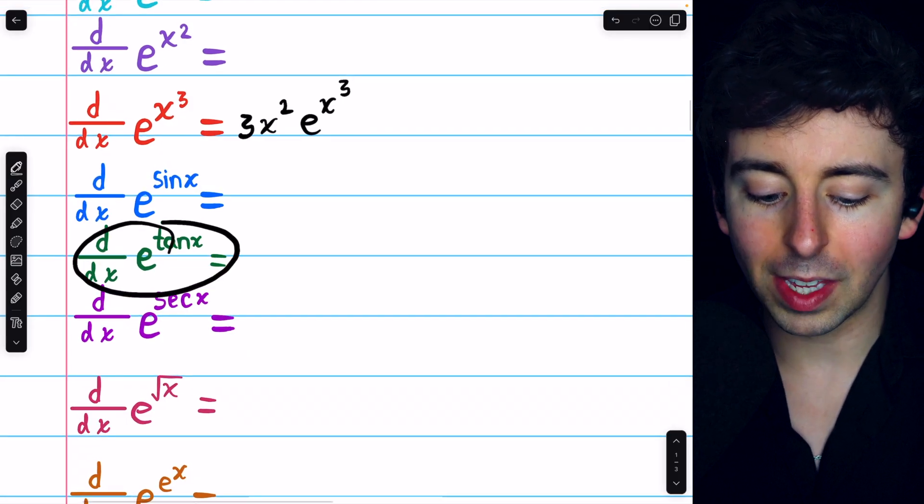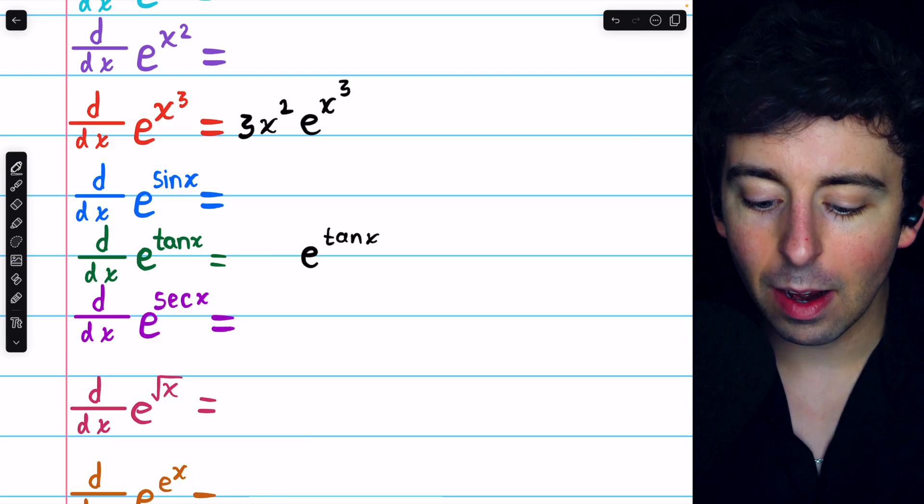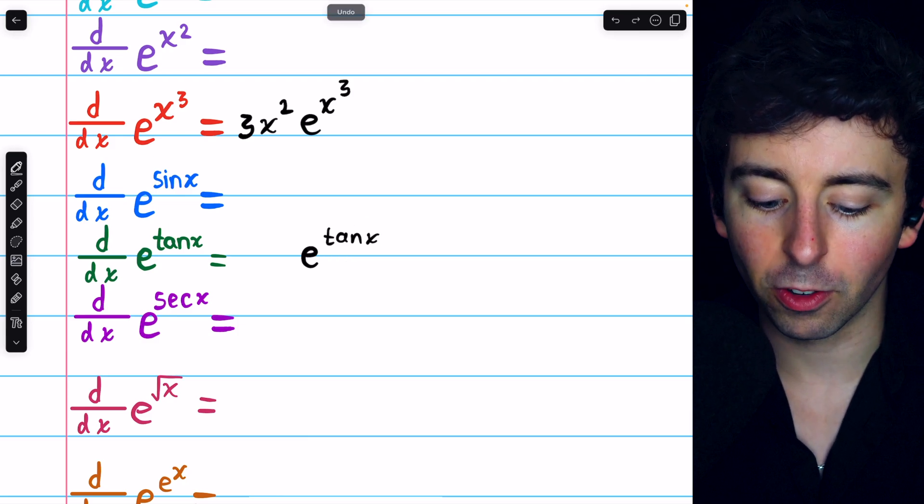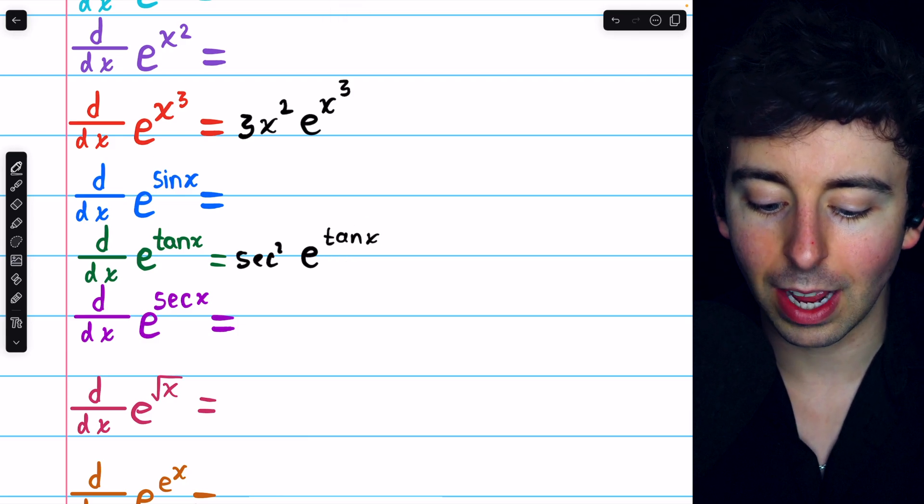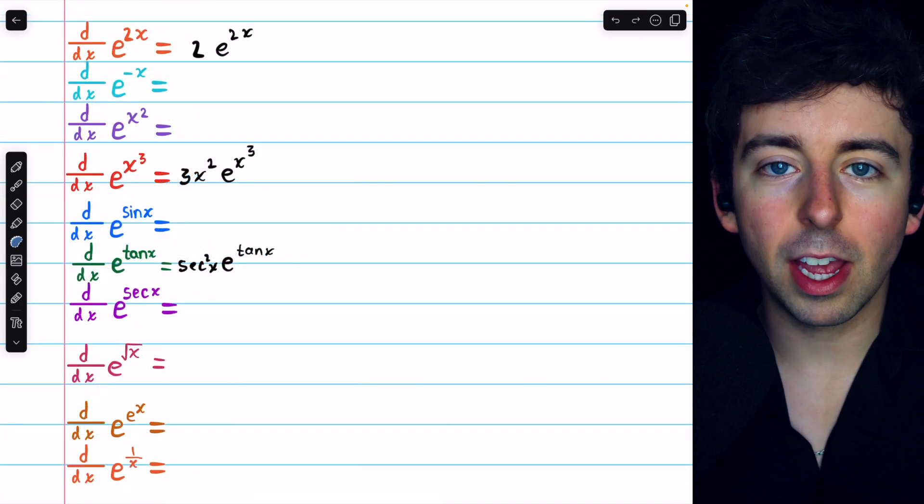What about the derivative of e to the tan x? Just leave the e alone, e to the tan x, and multiply by the derivative of that function in the exponent. The derivative of tan x is secant squared x. I invite you to try the other examples on your own.